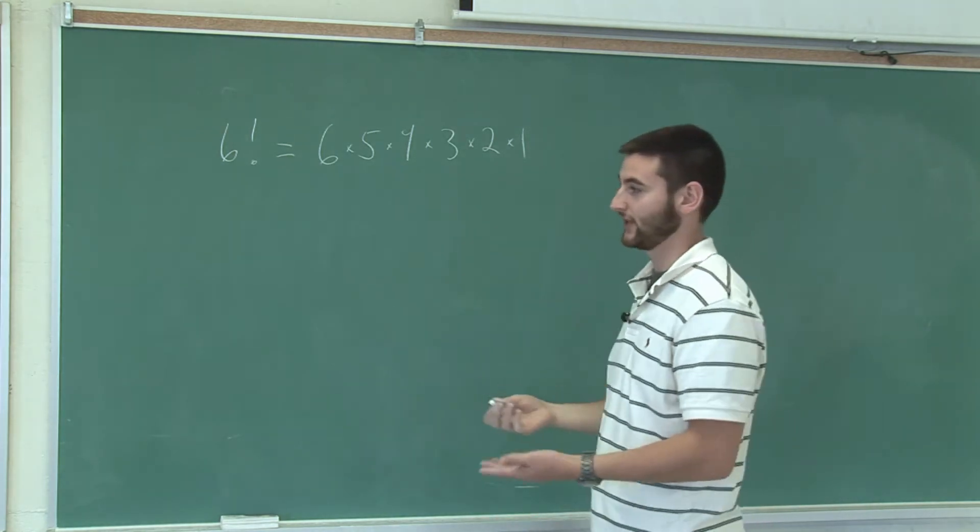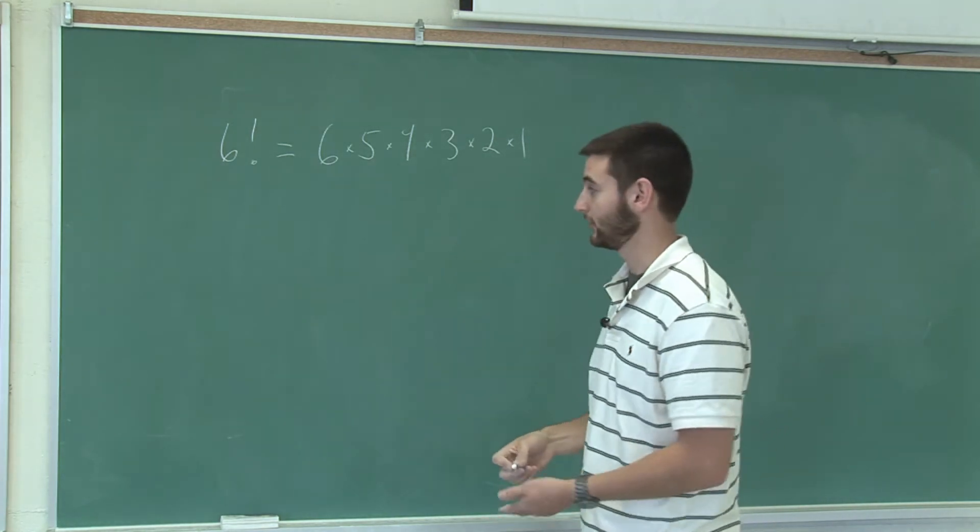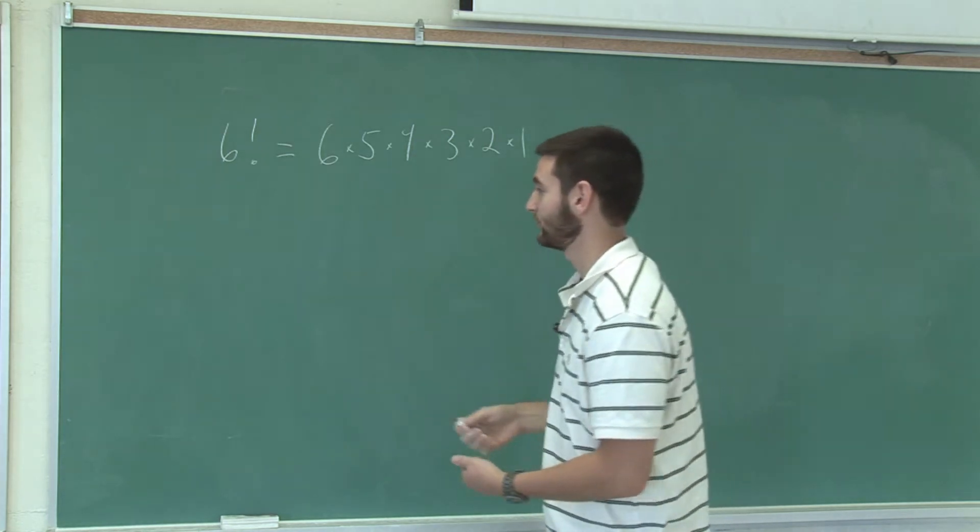To multiply two factorials, for example 5 factorial and 4 factorial, we must first determine the value of the individual factorial.